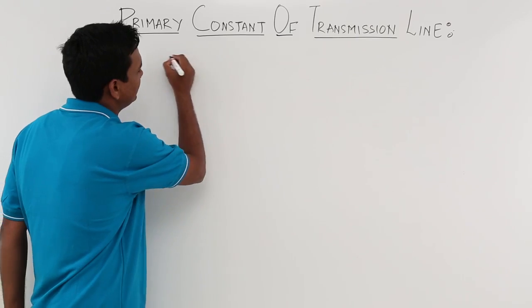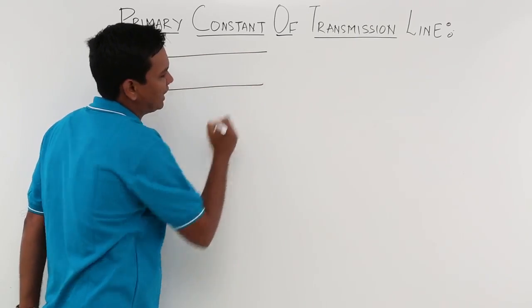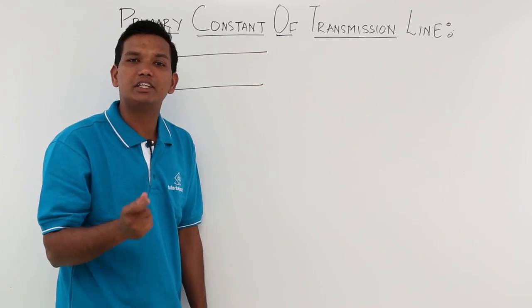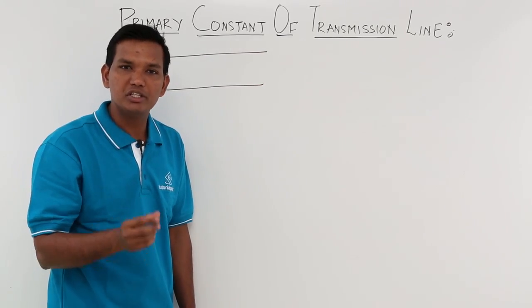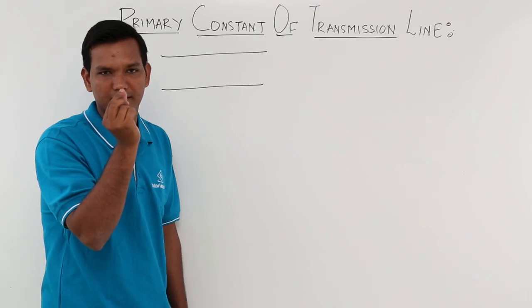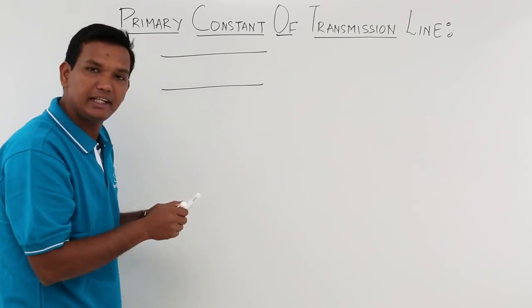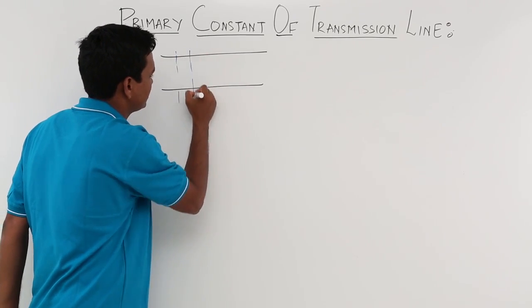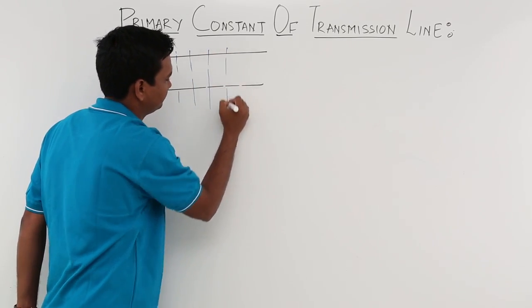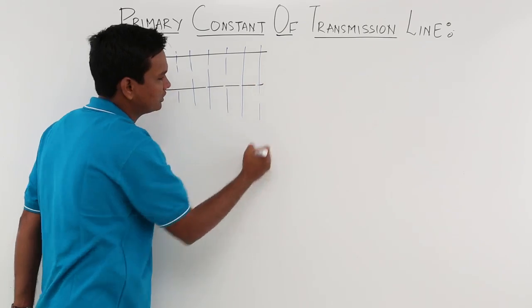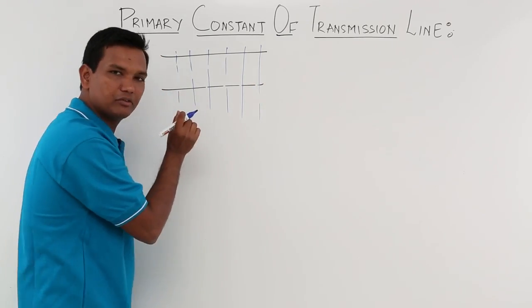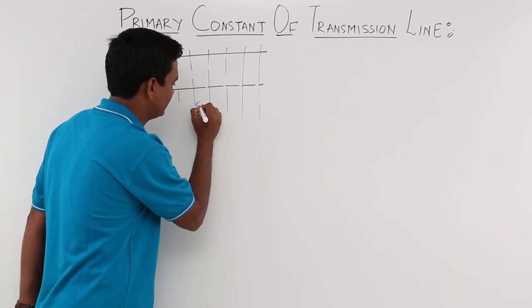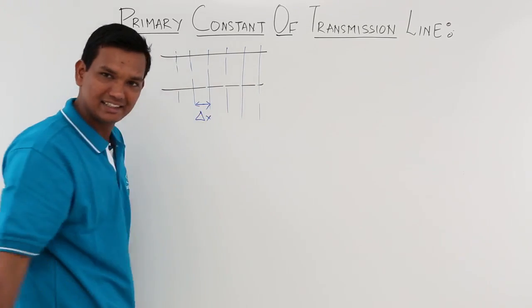Let us say that this is my parallel wire. If I want to get rid of the transient time effect, what I can do is reduce the length. So I can take small pieces of length — let me divide this into small segments. Let us say that the length of this small segment is delta x. So this is what my delta x is.